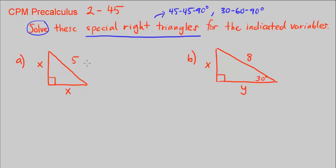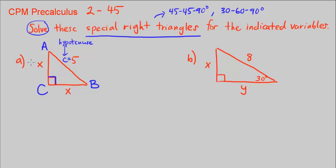Let's go ahead and do Part A. The first thing I like to do is label my triangle. With a right triangle, I like to make the right angle big C, so across from it the hypotenuse is little c. The reason I do that is because in the Pythagorean theorem, C represents the hypotenuse. Then I label A and B as the other vertices — across from big B is little b, and across from big A is little a.